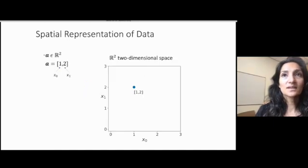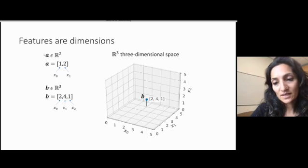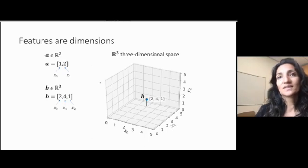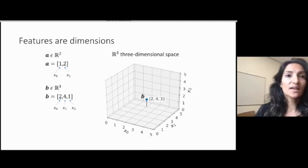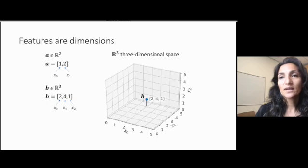Of course, if you have more than two dimensions, for example 3, you'll have to increase the dimensionality of this space. So here, you have a three-dimensional representation for this point B, whose feature values are 2, 4, and 1, and so that's its location in space.